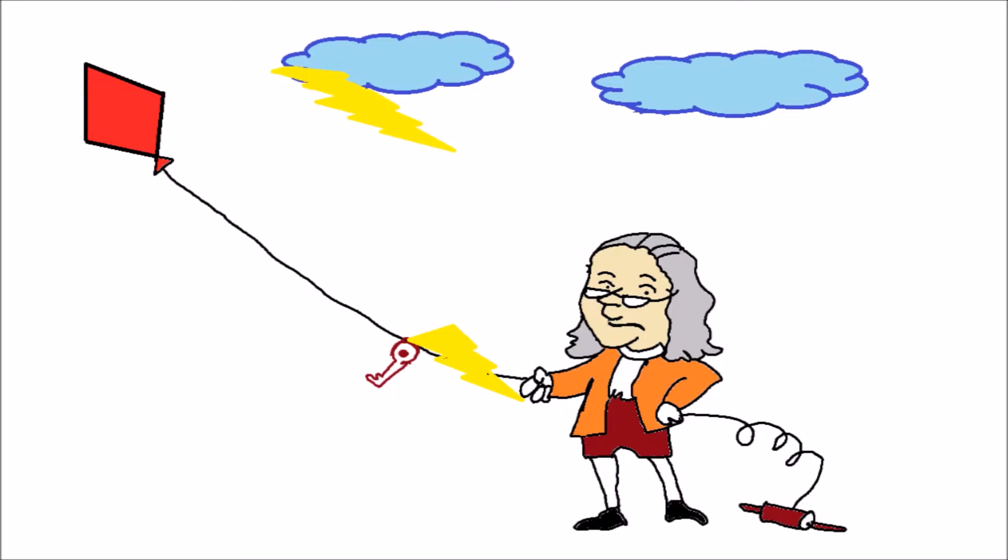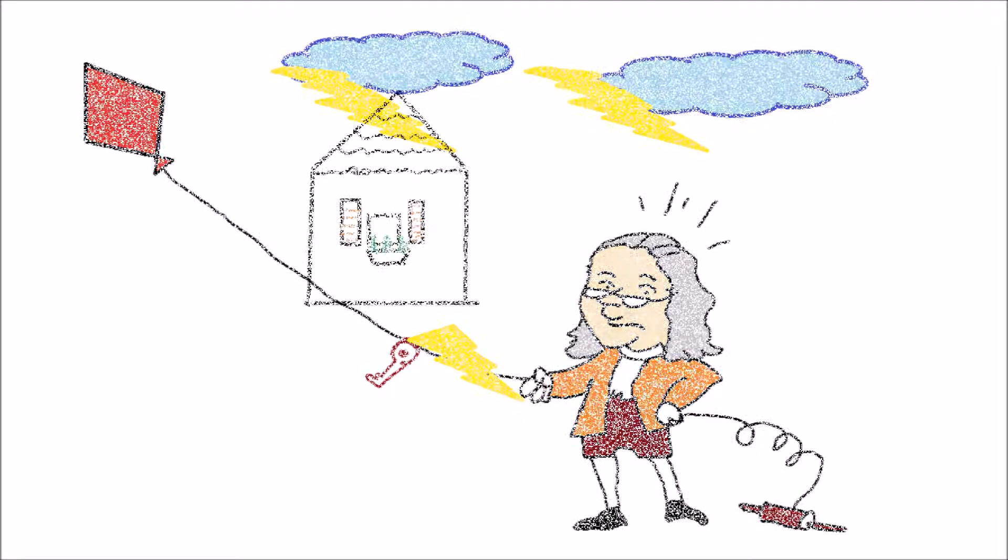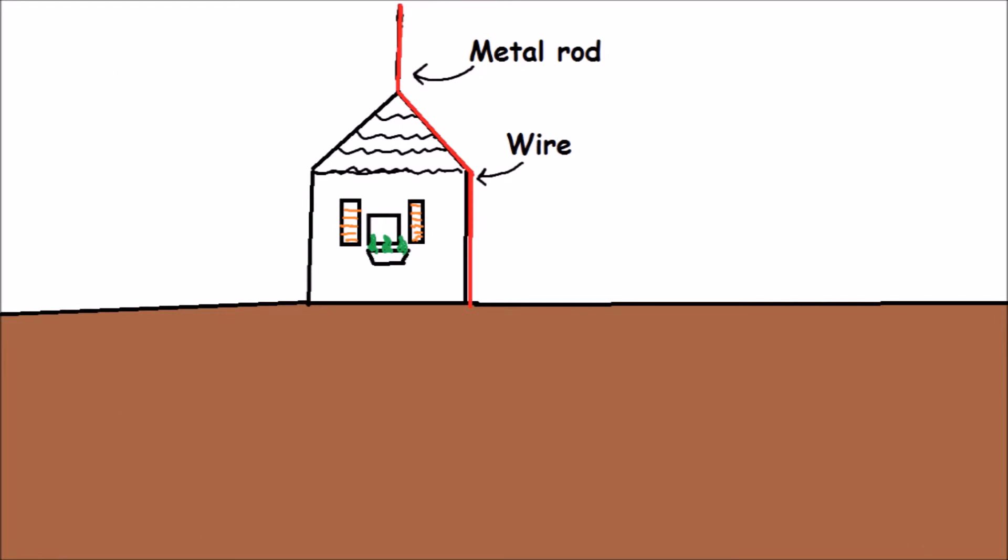Franklin nearly died but proved that lightning was a form of electricity. Metal rods are used to protect buildings from lightning by discharging charges to the ground.